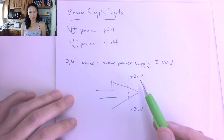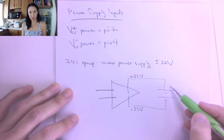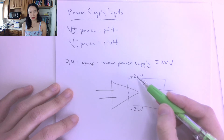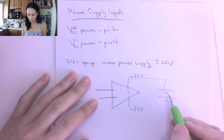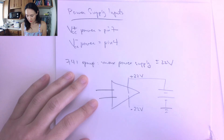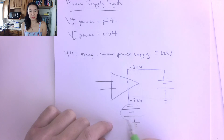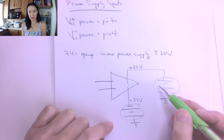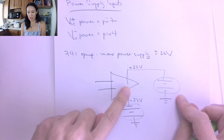To apply a positive and negative voltage to the op amp, you can't just attach the positive side to the plus and the negative side to the minus of a single supply, because that would be a positive voltage and zero — not a negative voltage. What you actually need is two separate power supplies: one with the positive side connected to pin seven and its negative grounded, and a second supply connected backwards — with its negative side connected to pin four and its positive side tied to ground. This gives you plus 22 volts at pin seven and minus 22 volts at pin four.